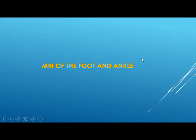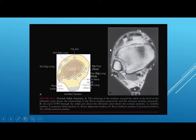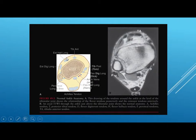We shift to MRI of the foot and ankle. The important tendons are the posterior flexor tendons — tibialis posterior, flexor digitorum longus, and flexor hallucis longus. Opposite to tibialis posterior is tibialis anterior; opposite to flexor digitorum longus is extensor digitorum longus; opposite to flexor hallucis longus is extensor hallucis longus. The peroneus longus and brevis lie posterolaterally. These are best identified on axial images along with the Achilles tendon.